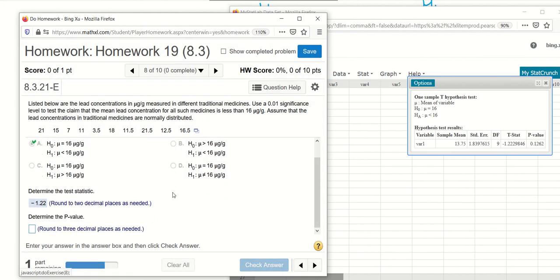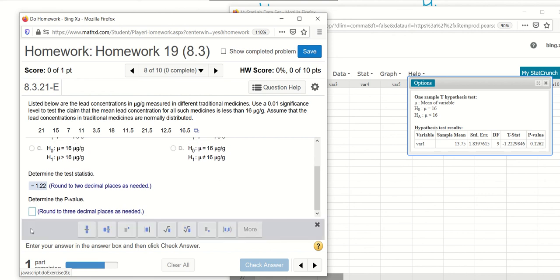And your p-value, it's given here, 0.1262, so rounded to the nearest three decimal places will be 0.126.